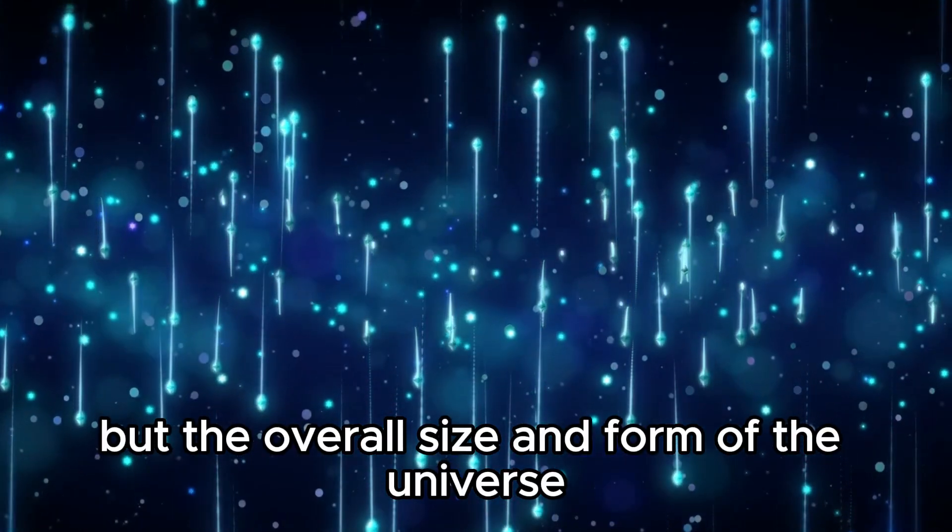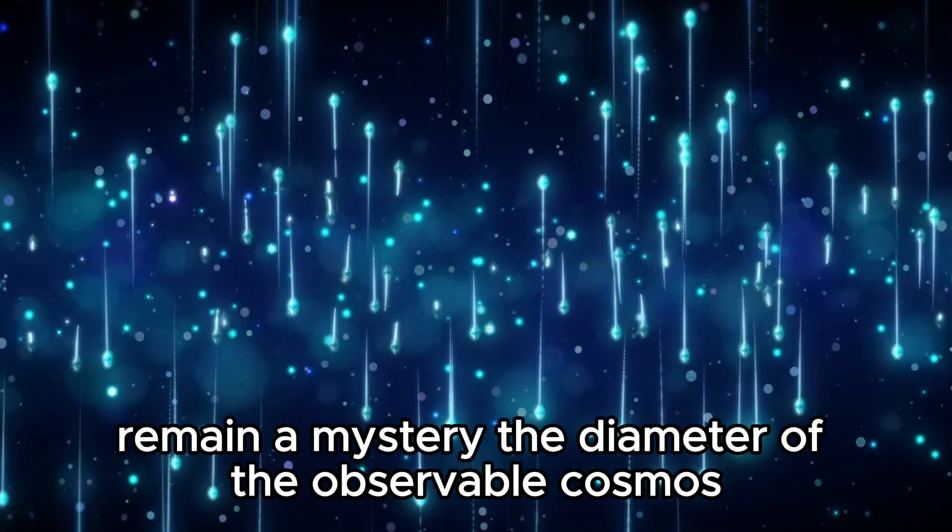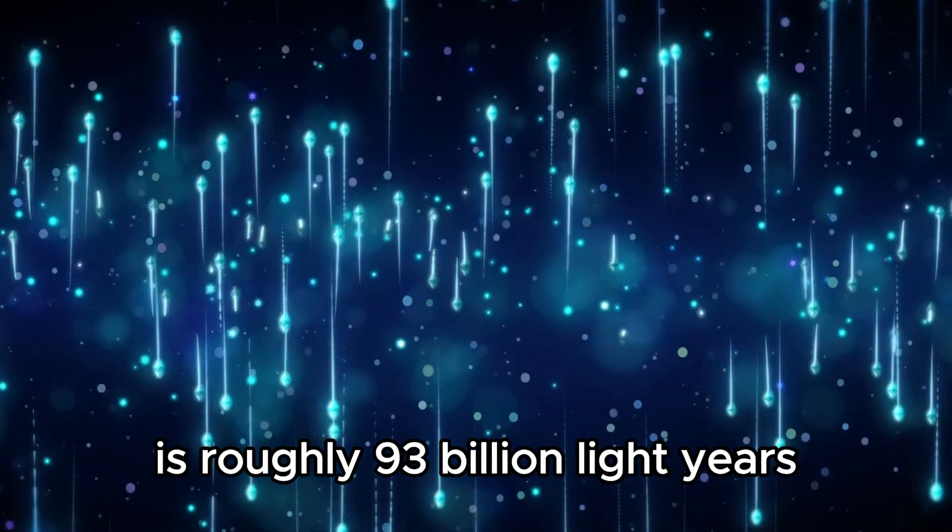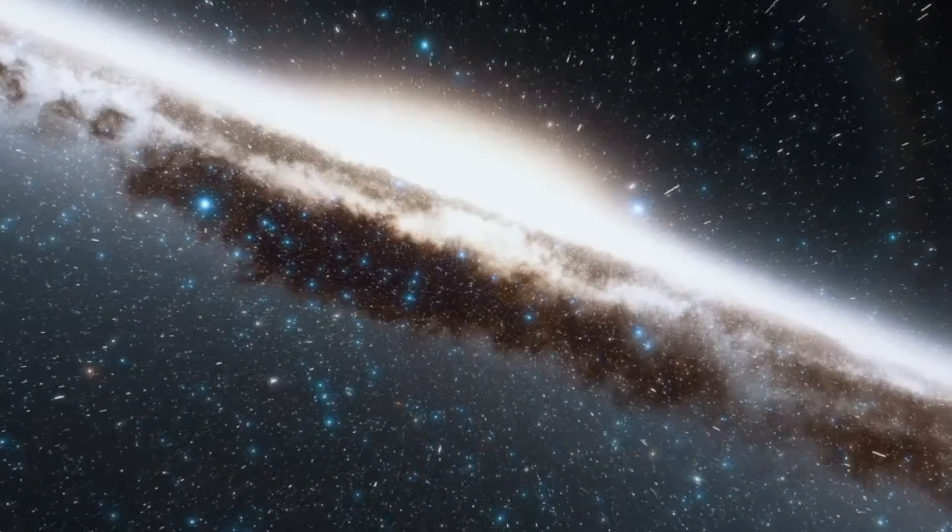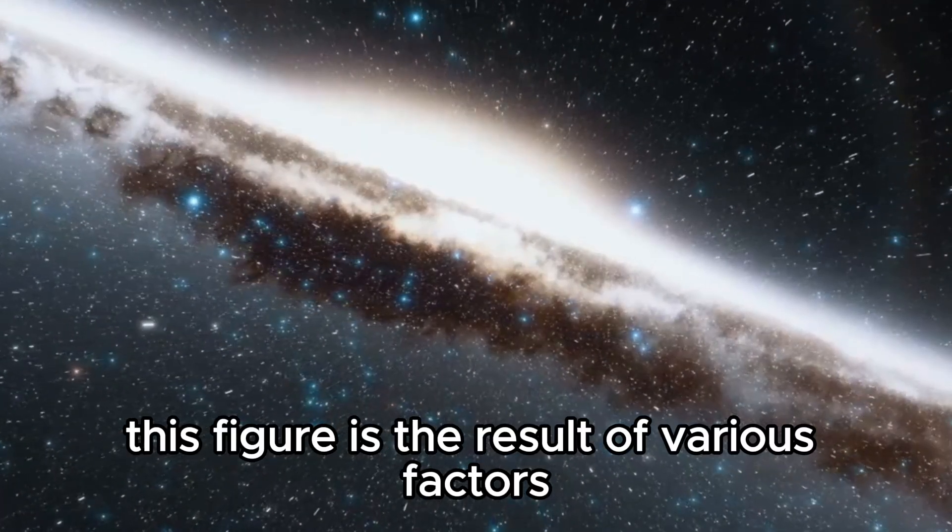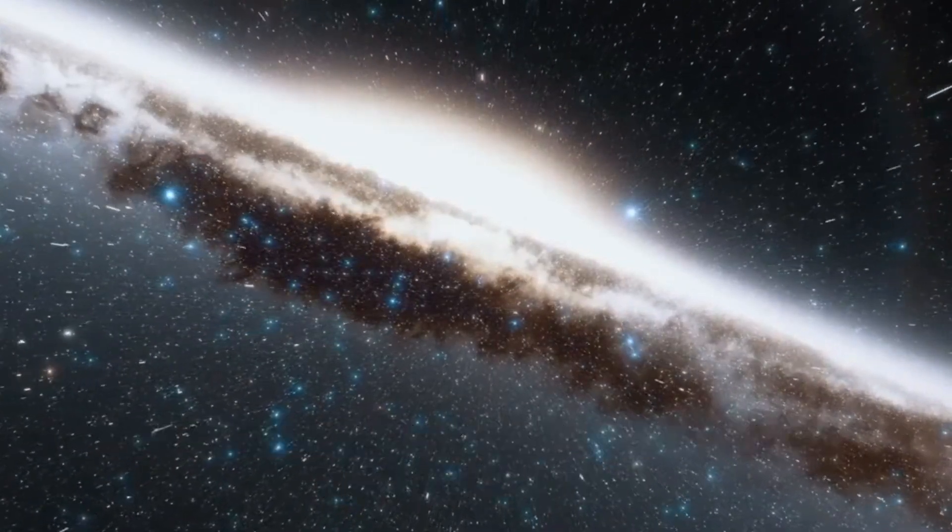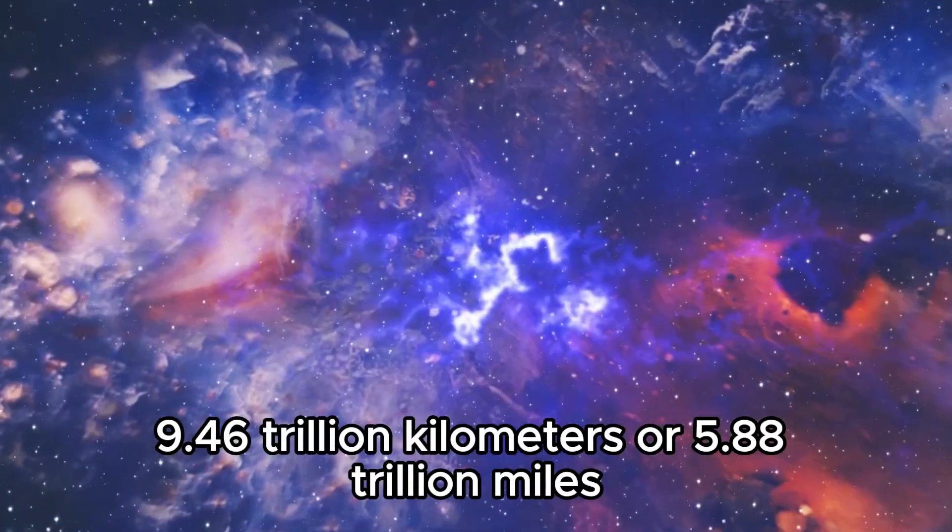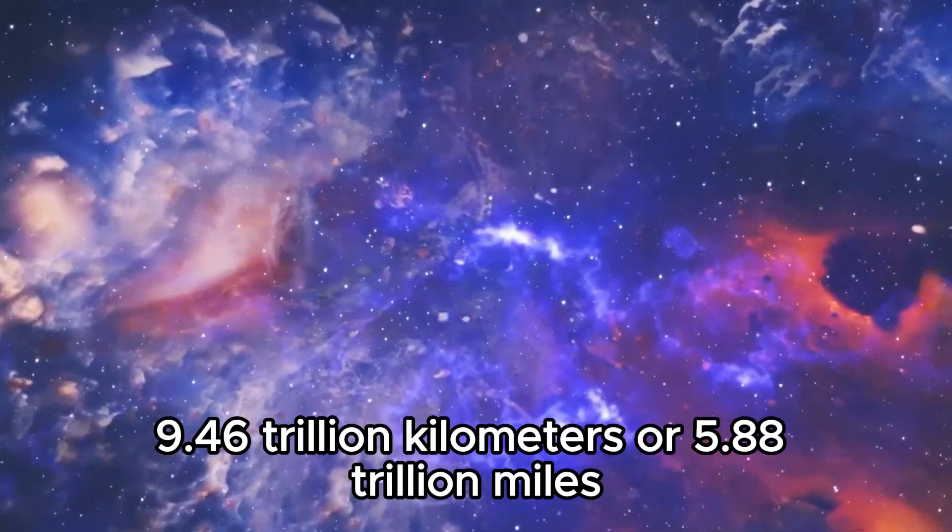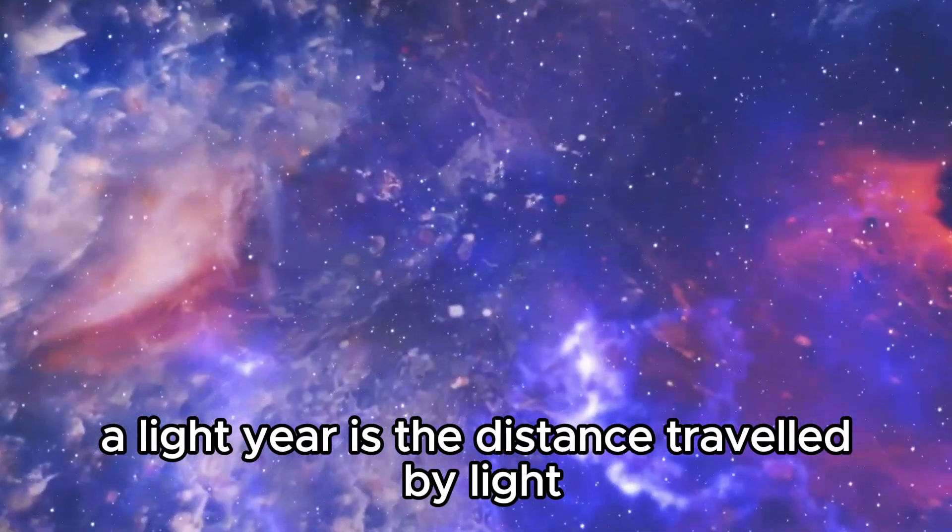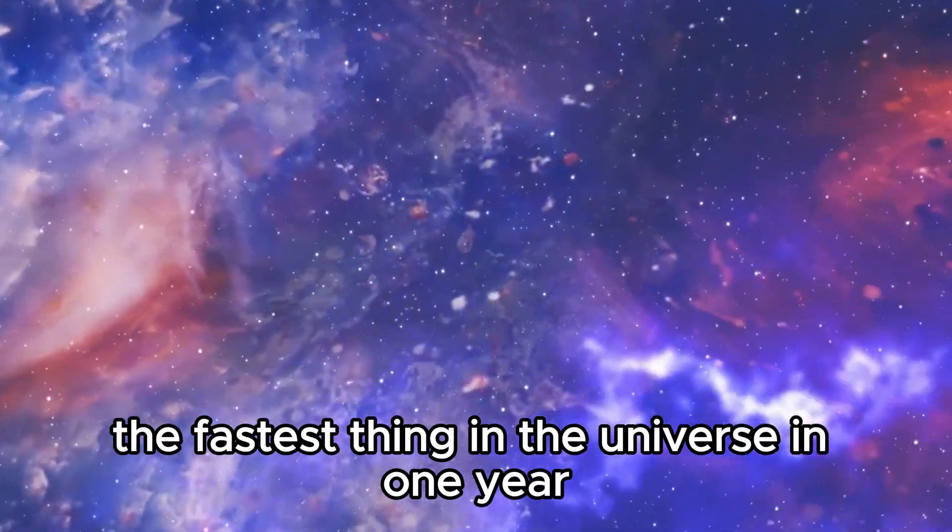But the overall size and form of the universe remain a mystery. The diameter of the observable cosmos is roughly 93 billion light-years. This figure is the result of various factors. The distance that light can travel in one Earth year is 9.46 trillion kilometers or 5.88 trillion miles. A light-year is the distance traveled by light, the fastest thing in the universe, in one year.